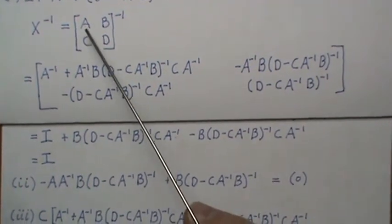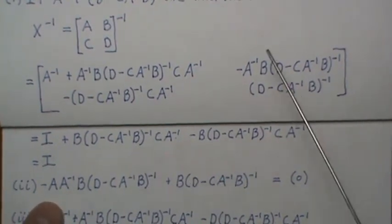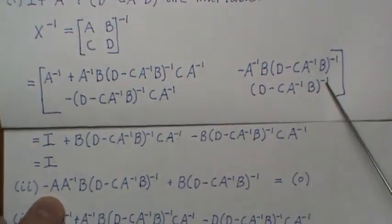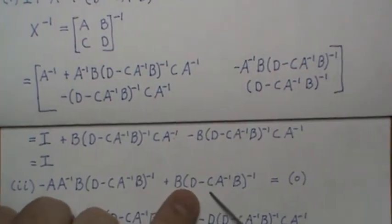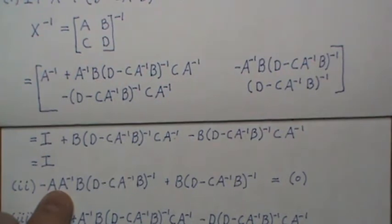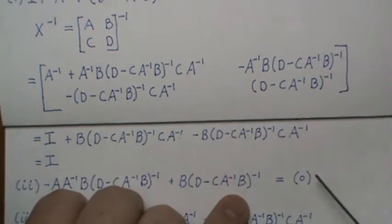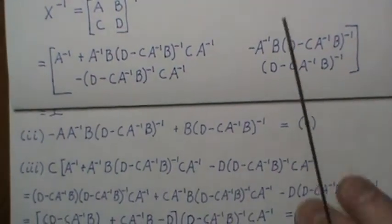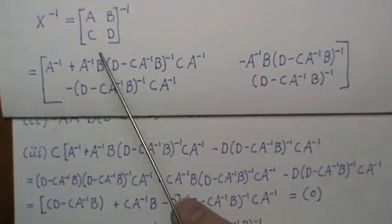For the second result, we take the first row [A B] times the second column of the proposed inverse. The minus sign is there, A gives that expression, and B times that piece — since A times A-inverse is the identity, it goes away — and we have minus something plus the same thing, so it's the zero matrix.